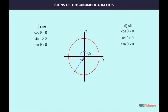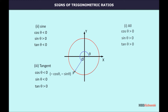In the third quadrant, theta lies between 180 degrees and 270 degrees. Then both A and B are negative, while OP is positive. So the coordinates of P are (−cos theta, −sine theta). Here, both sine theta and cos theta are negative. But tan theta is positive, since tan theta equals sine theta upon cos theta — a negative divided by a negative gives a positive.